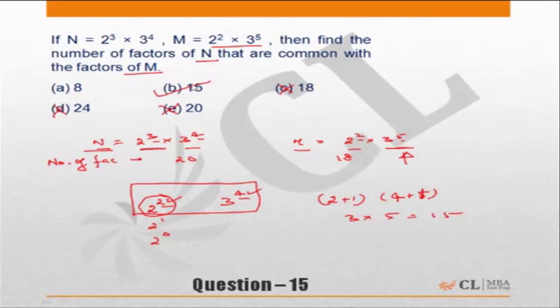So number of common factors: look at the common prime factor and go to the lowest power for each prime factor. Out here 2 cubed and 2 square, we went for 2 square. Between 3 to power 4 and 3 to power 5, we went for 3 to power 4. So 2 plus 1 into 4 plus 1 is the number of common factors, which in this case becomes 15.